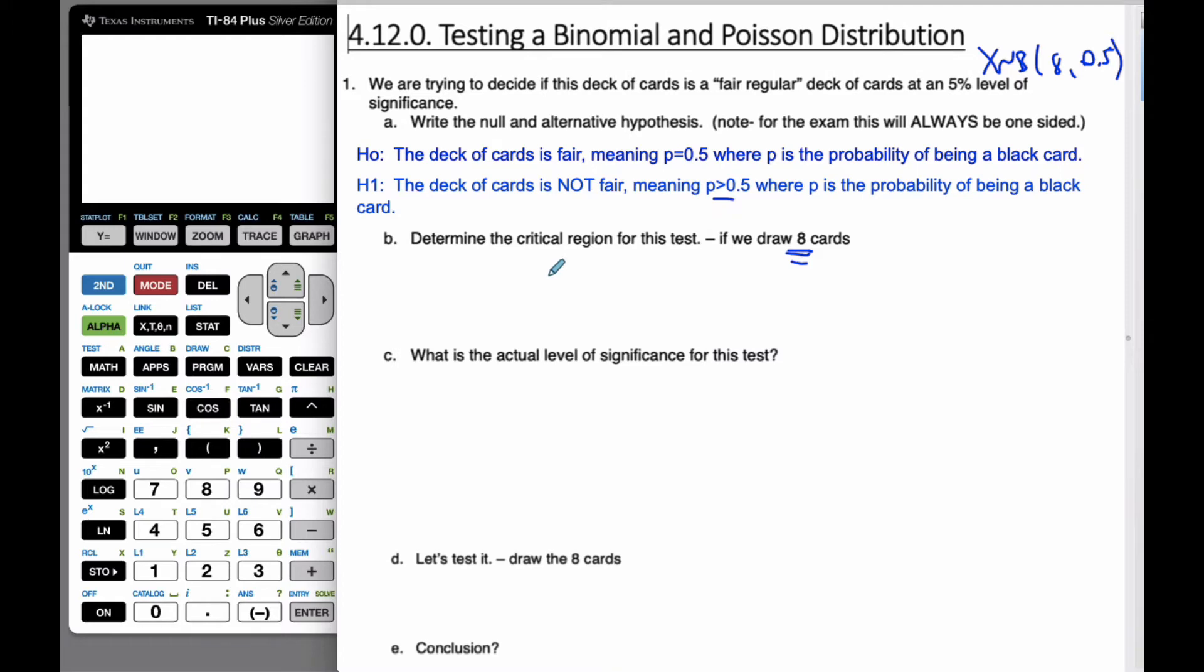So I want to determine the critical region for this test if we draw 8 cards. Well, it's a binomial situation. So you have to consider what's going on here. There's going to be a probability pulling 0 and 1 and 2 and 3 and 4 and 5 and 6 and 7 and 8 cards. Each of these has a certain probability attached to it. So when I add up all these probabilities, they are going to add up to 1.